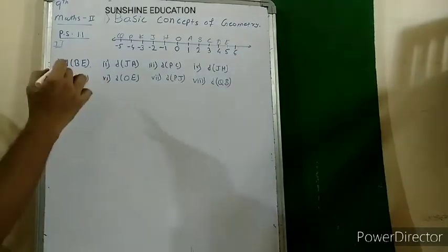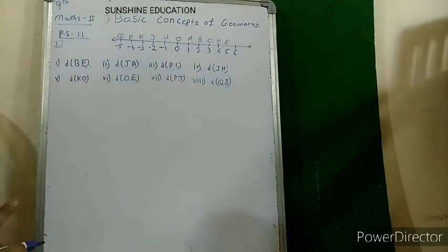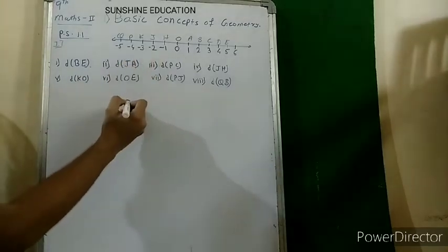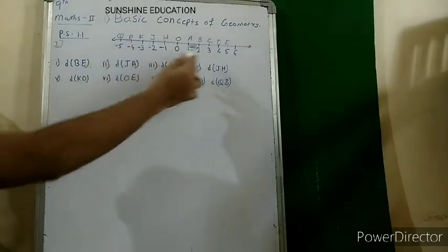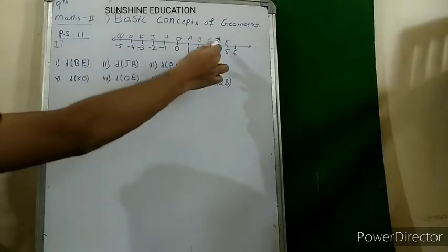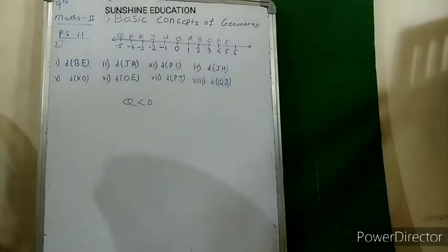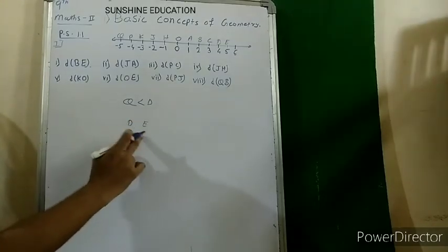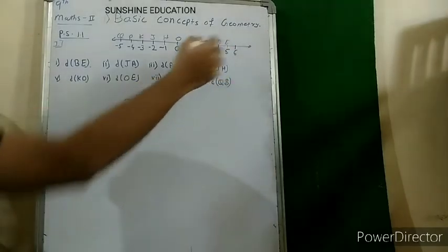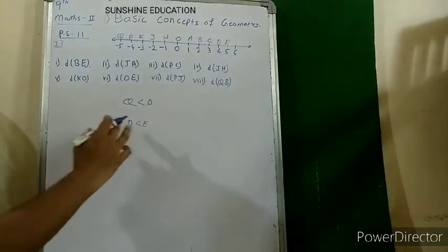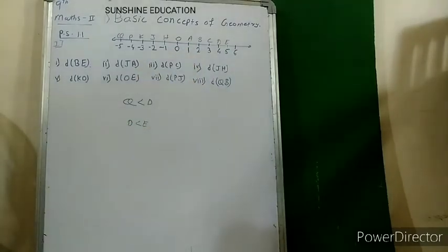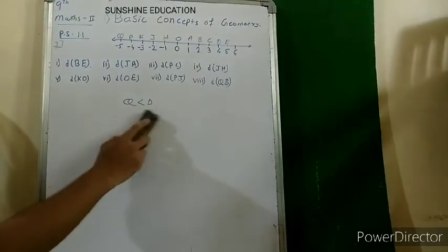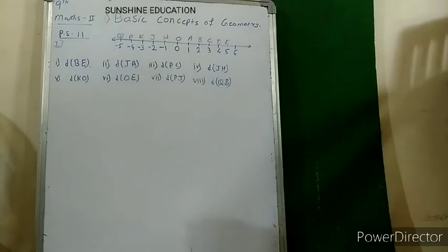Always remember that whichever number is on the right-hand side is greater. For example, comparing Q and D — D is at the right-hand side so D is greater. Comparing D and E — E is at the right-hand side so E is greater. Whichever number is at the right side is greater than the one to its left.